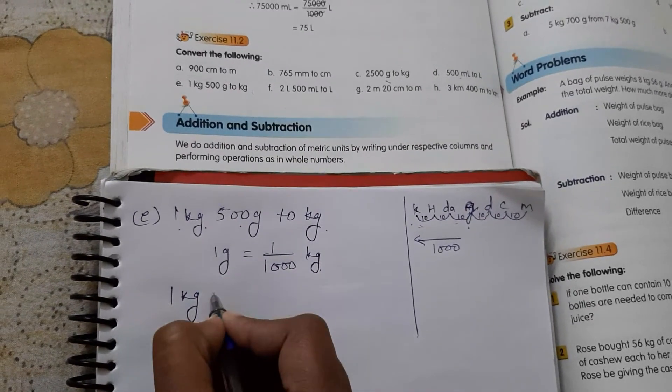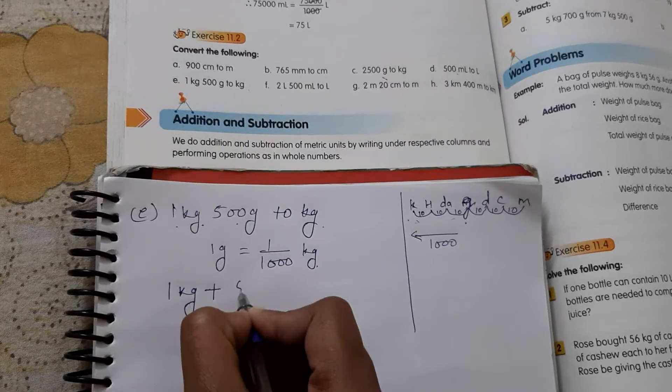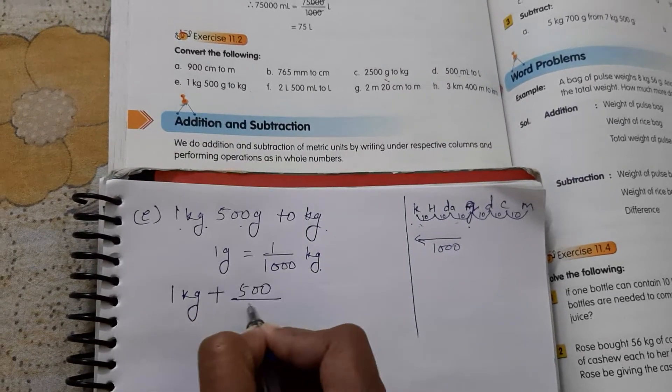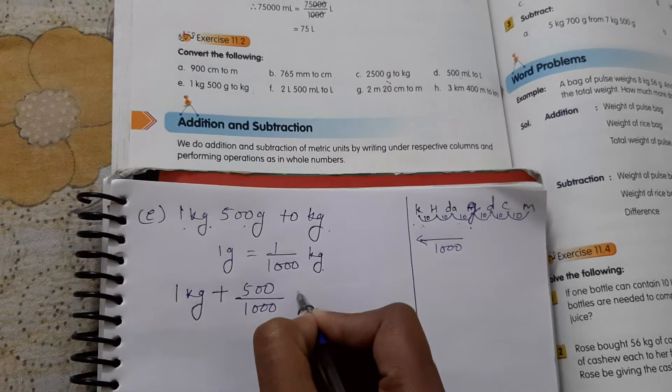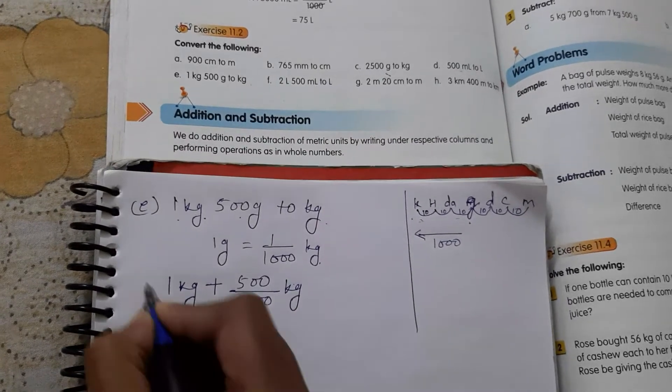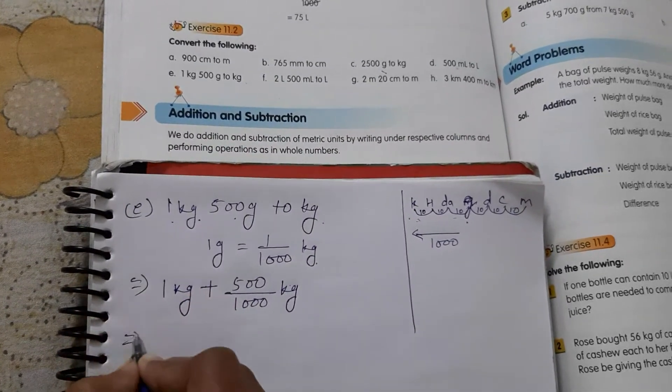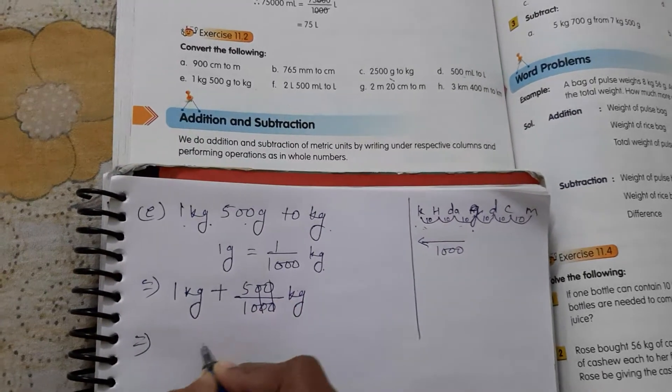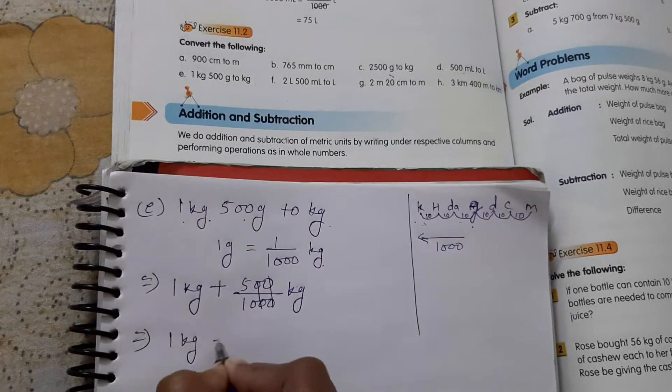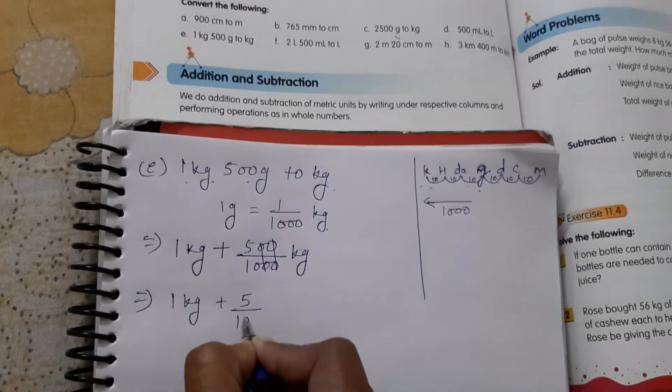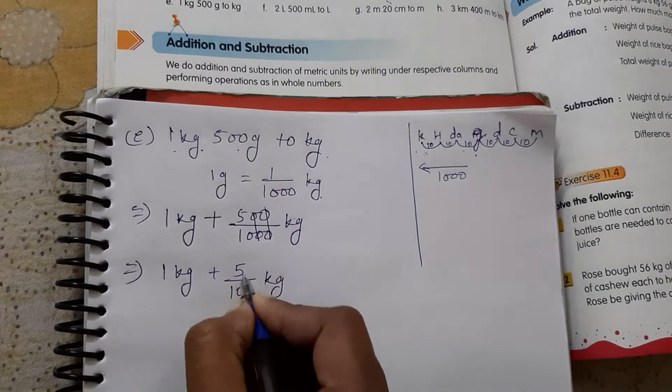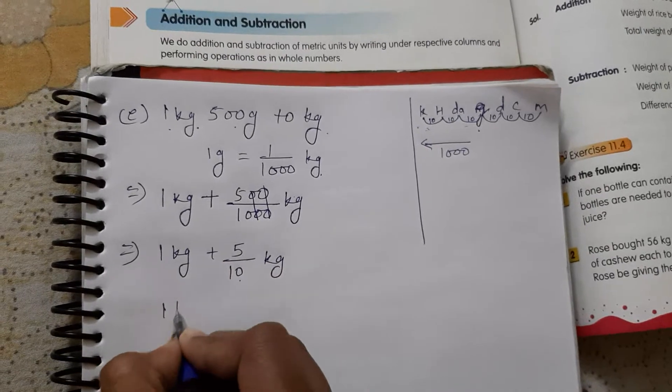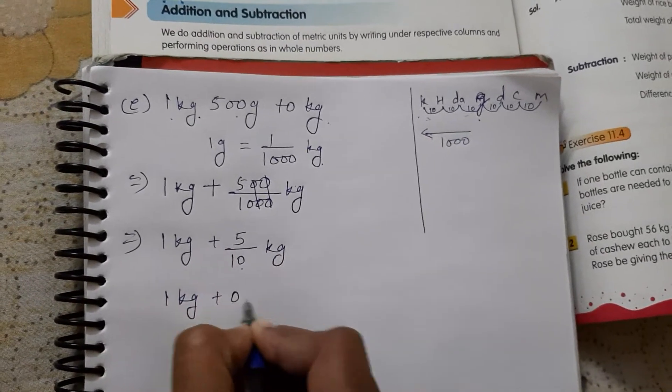So one kg as it is. One kg plus 500 divided by thousand kg. When divide is applied, one zero by one zero, one zero by one zero. The remaining is one kg plus five upon ten. Now according to the zeros, we can put the decimal. So it will be 0.5.